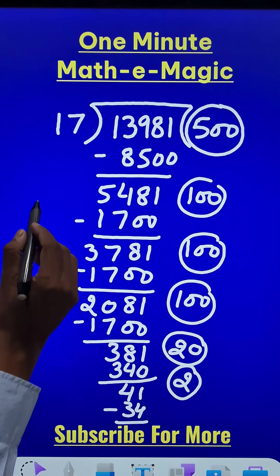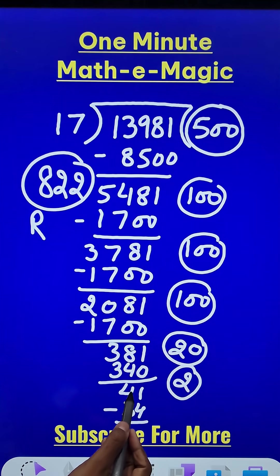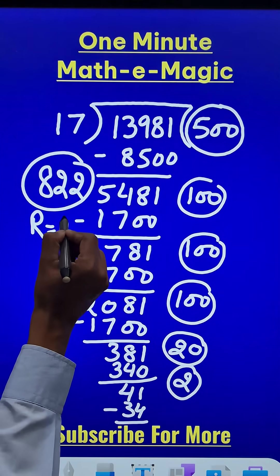So for this division problem, the quotient is going to be 822 and the remainder will be 41 minus 34, which is 7.